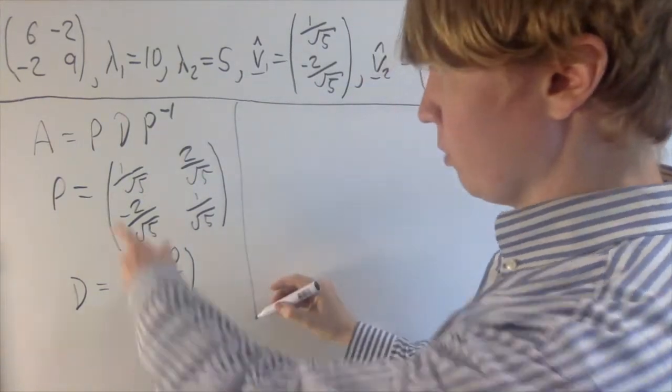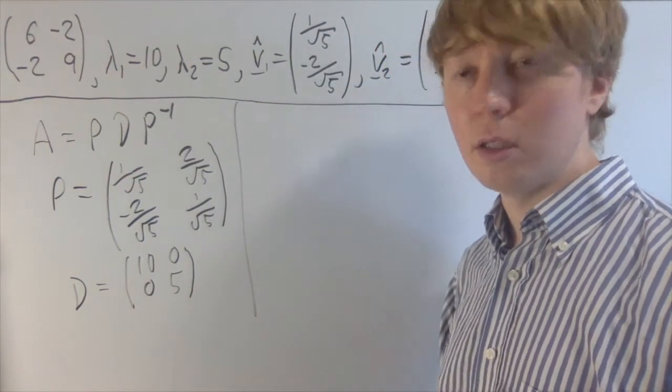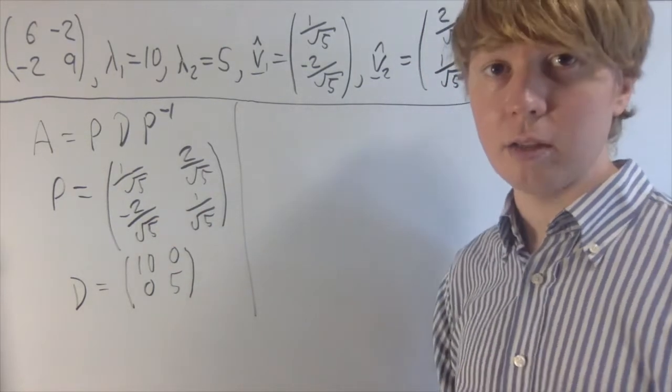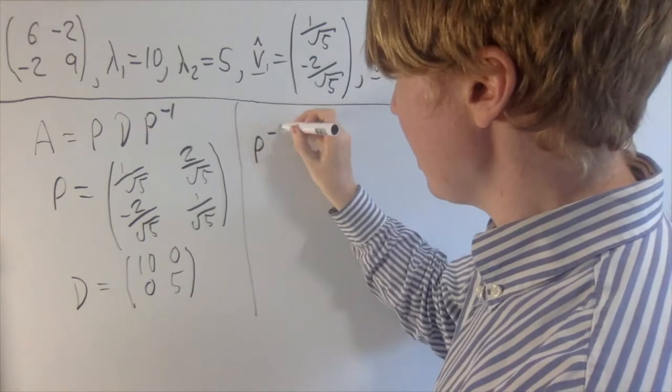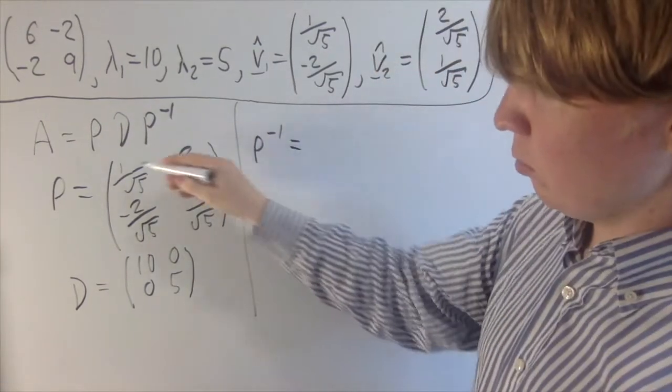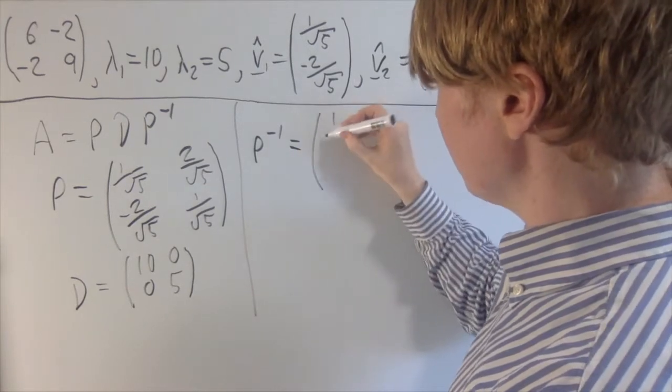D, all we need to do here is just put in 10 and 5. And then we need to think a little bit more about what P inverse is. But this is quite nice for this example, because the determinant of P, you can really easily check that that's just 1. So we just divide by 1, so nothing changes there. And we need to swap around these 1 over root 5s, but they're the same, so nothing changes there.